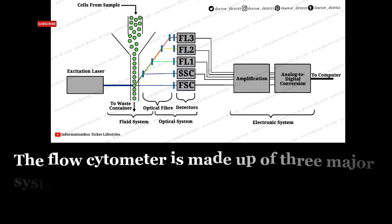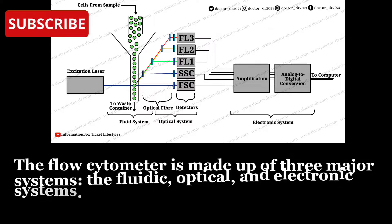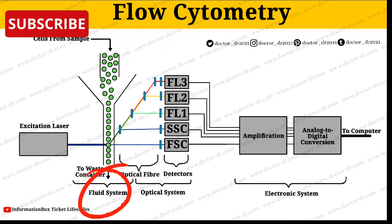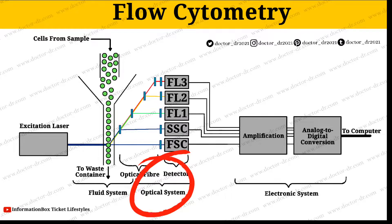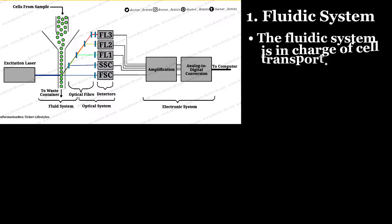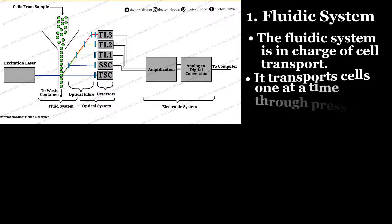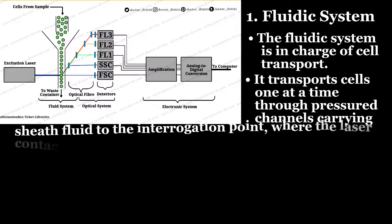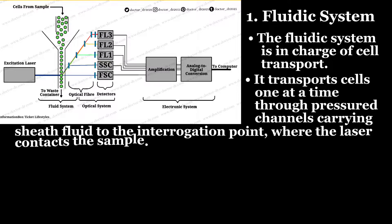With the help of the diagram, you can see that flow cytometry is made up of three major systems: number one, the fluidic system; number two, the optical system; and number three, the electronic system. The fluidic system is in charge of cell transport — it transports cells one at a time through pressured channels carrying shield fluid to the interrogation point where the laser contacts the sample.